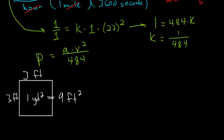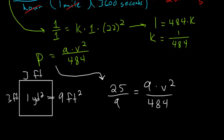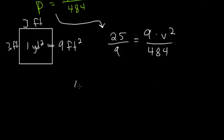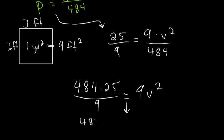And pressure we're given is 25 pounds per area in this case. So we have 25 divided by 9 once we start plugging in values here. And this is equal to the area again, which is 9 times the velocity squared divided by 484. And multiplying everything by 484, we have 484 times 25 divided by 9 equals 9v squared. And this is equal to v squared.